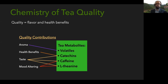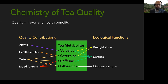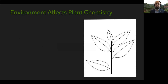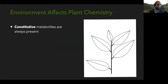These chemicals don't exist just to make tea taste good — they've evolved to deal with stress the plant might experience. Volatiles and catechins can be involved in coping with drought stress. Caffeine is neurotoxic to insects, slugs, and snails, and is also an antifungal. L-theanine is the nitrogen transport mechanism of the tea plant. Some of these chemicals are present all the time — we call those constitutive. Caffeine is more or less constitutive in tea, for example.